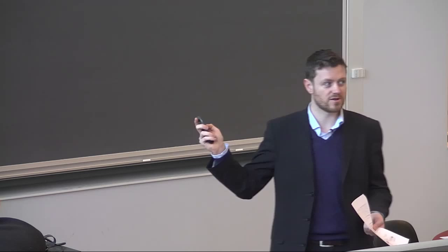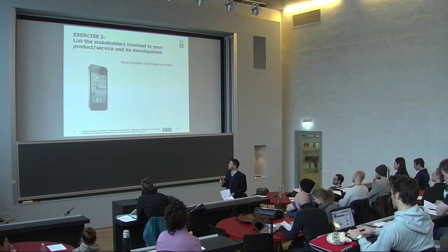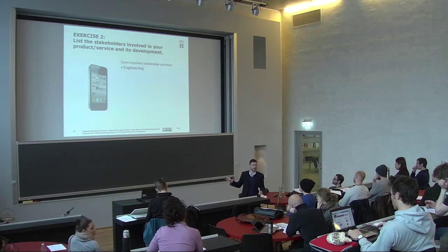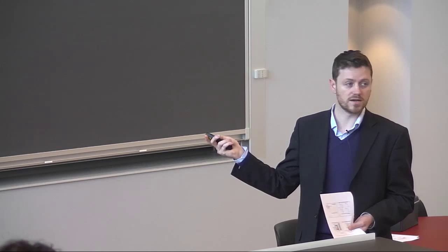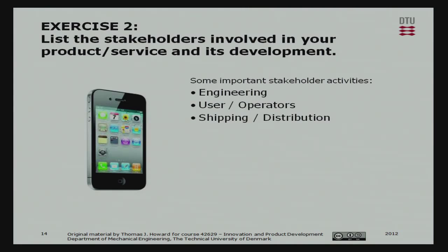We have a second exercise — discuss in your groups. Consider your own product or something like the iPhone. Start listing some of the key stakeholders you have to design for and consider in the production of your product. Some important stakeholders would be the engineering department, the users or operators, and shipping and distribution. The way you design the product really does affect its shipping and distribution. You've got five minutes.